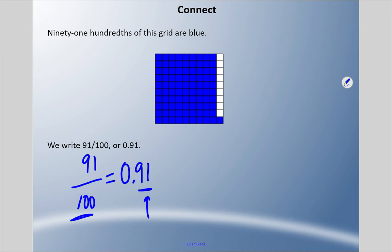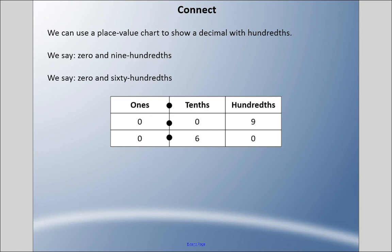We can also use a place value chart to show a decimal with hundredths. I have two here. For the first one, we have zero and nine-hundredths. For the second one, we have zero and sixty-hundredths. I don't mind if you just say nine-hundredths for the first one and sixty-hundredths for the second one, but properly would be zero and. Remember from our last video, anytime you see the decimal, we use the word 'and'.